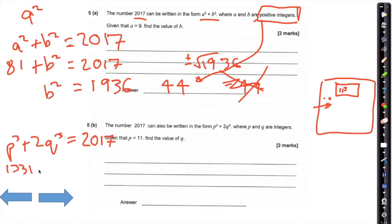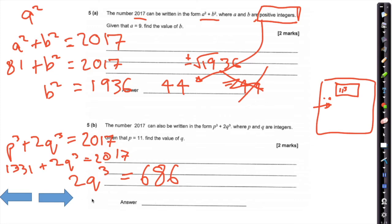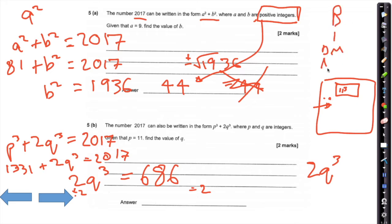If I subtract 1,331 from both sides, that gives me 2q cubed equals 686. Now divide by 2 on both sides to make it just q cubed — remember, when you have 2q cubed, you have to do the inverse of BIDMAS. So divide by 2 first, then cube root. Dividing by 2 gives us q cubed equals 343.